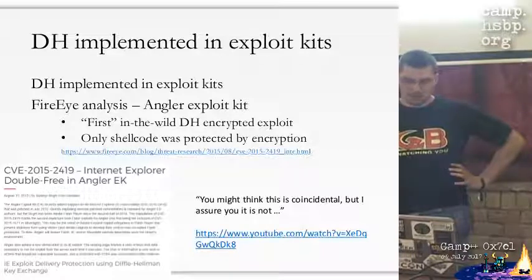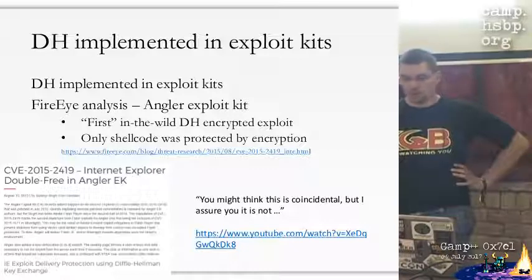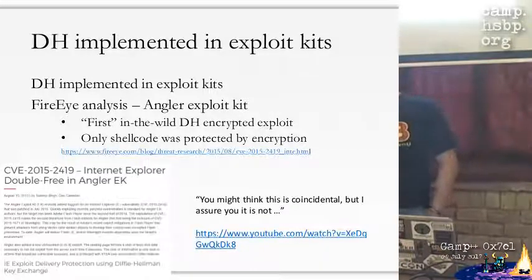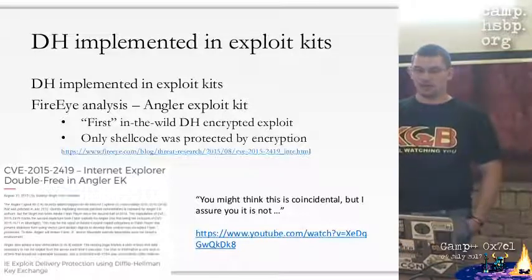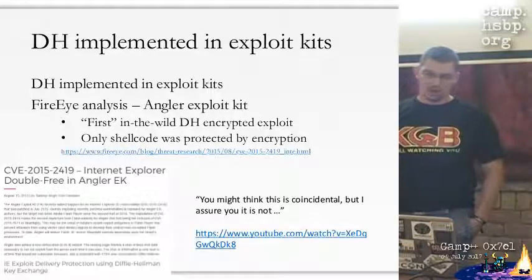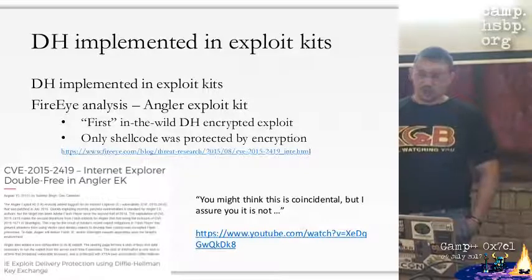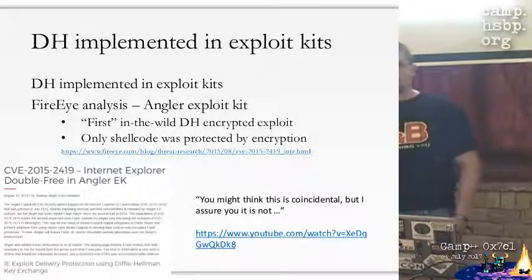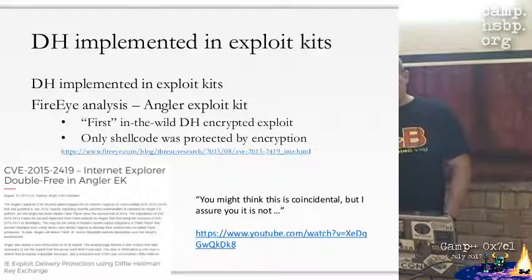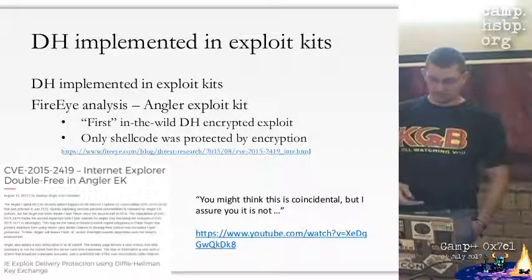They implemented it with some differences. One very important difference is that they did not encrypt the whole exploit code - they only encrypted the shellcode, which made sense because they were not using any zero-days. What they were interested in was protecting their shellcode so antivirus companies would have a hard time getting their malware payloads. And because they had to target older versions of IE, they couldn't use elliptic curve cryptography, so they chose regular Diffie-Hellman. I don't think it's a coincidence that I published my research and two months later the bad guys implemented it.